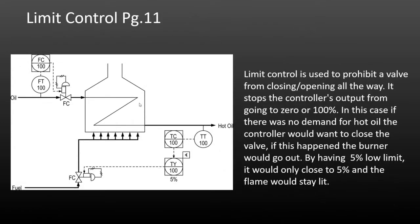Here's a limit control application — a furnace fuel gas example. With most furnaces, like furnaces in our homes, we have pilot lights that stay on all the time. Industrial furnaces are similar — we need a minimum amount of fuel required in order to keep the furnace burning. Limit control is used to prohibit a valve from closing or opening all the way, stopping the controller from going to zero or 100% based on whatever setting we put into it.